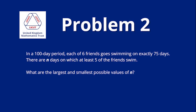Problem two. In a 100-day period, each of six friends goes swimming on exactly 75 days. There are n days on which at least five of the friends swim. What are the largest and smallest possible values of n?